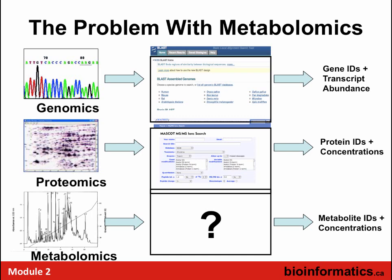Whether it's tools like Mascot or BLAST, and databases like GenBank or other proteomics databases — in metabolomics, for the longest time, if you took an HPLC, GC-MS, LC-MS, or NMR spectrum and uploaded it, you couldn't do anything. You couldn't get metabolite IDs and concentrations. There hasn't been a BLAST or a Mascot for metabolomics, and that has arguably continued to be an issue.